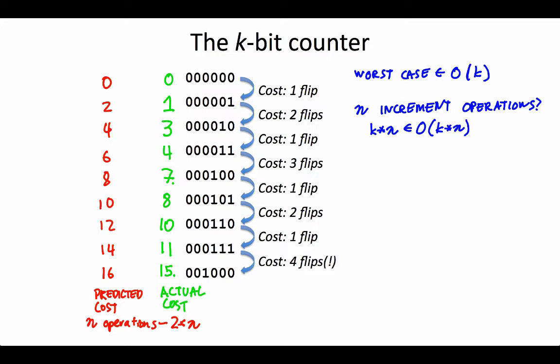Obviously, the prediction is never right, but the prediction is always too high. If we could get to the point where we could prove that our prediction was always greater than or equal to, in terms of the number of flips, the actual cost that we actually had to pay, we would be able to prove that n increment operations would take time less than 2 times n. And that's in big O of k times n, but there's a simpler bound, which is that that's in big O of n.